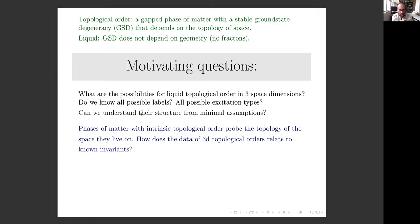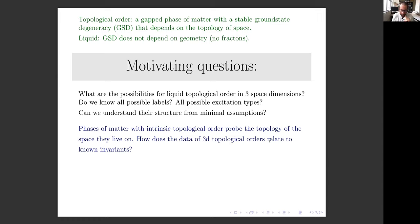There's a second aspect which is interesting in 3+1 dimensions: three manifolds are interesting on their own. Unlike two manifolds, which are labeled by just a single number—the genus—a topological phase of matter is a probe of the topology of the space it lives on. It produces an integer, the number of ground states, as the most bare-bones invariant. So it's interesting to ask how data from 3D topological orders relates to known invariants of three manifolds.